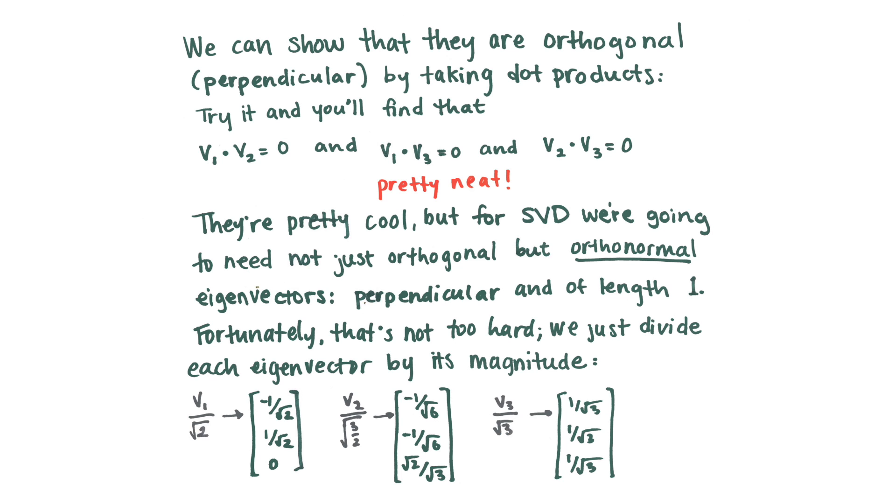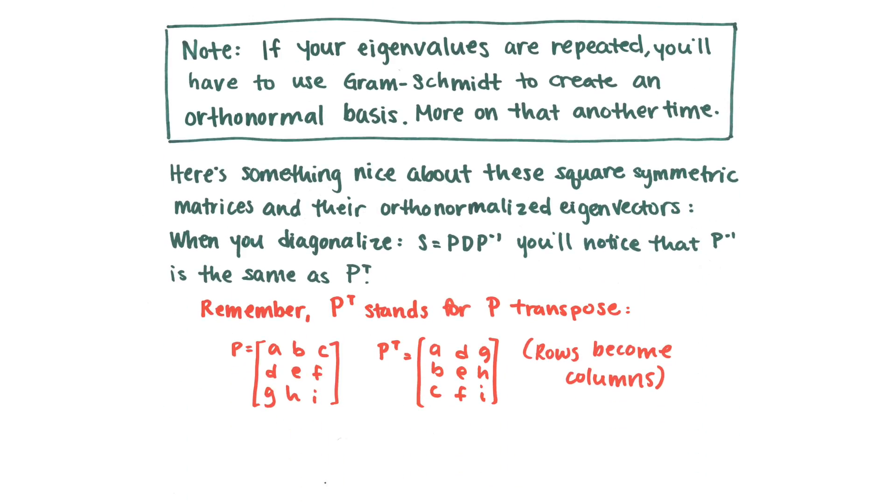They need to be perpendicular, which is orthogonal, and normal, which is length one. And we smash those words together into orthonormal. And orthonormal eigenvectors are pretty special. So that's what we want for SVD. There's a special case here where you have repeated eigenvalues, and you're going to have some trouble with making an orthonormal basis. And so you need to use Gram-Schmidt to come up with some more appropriate eigenvectors. But we're not going to do that right now, because that's a whole other process. So that'll be a different video sometime.